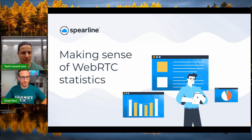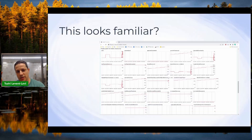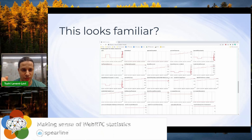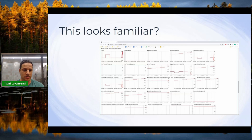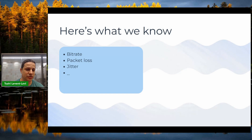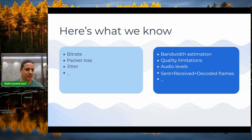When you look at WebRTC statistics, you'll typically open chrome://webrtc-internals and see a lot of text and graphs. If you're developing with WebRTC, this screen is familiar. You can find metrics like bit rates, packet losses, jitter, bandwidth estimation for video, quality limitations, audio levels, and sent versus received versus decoded frames.